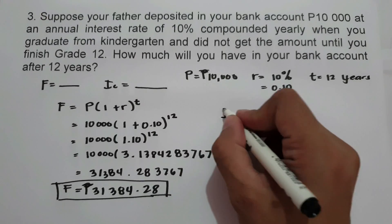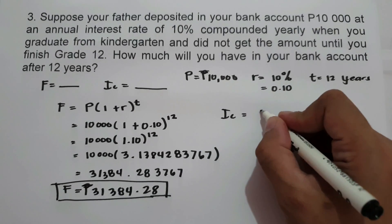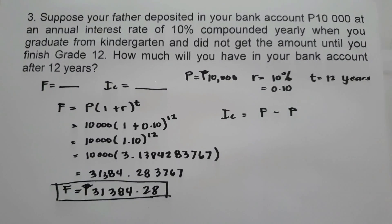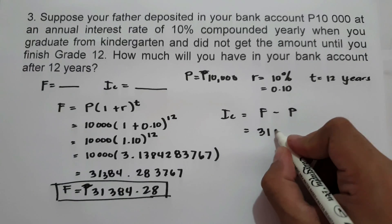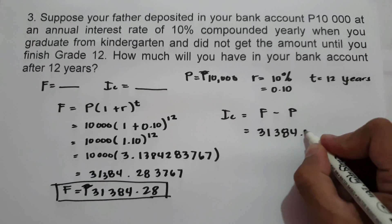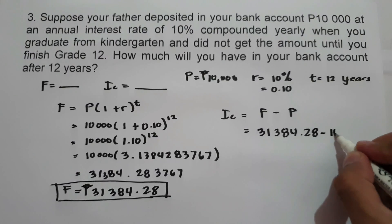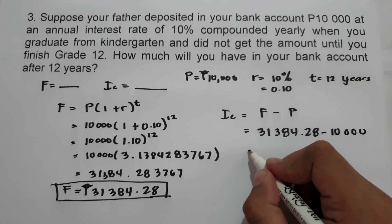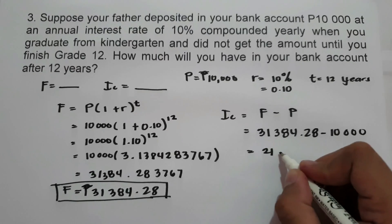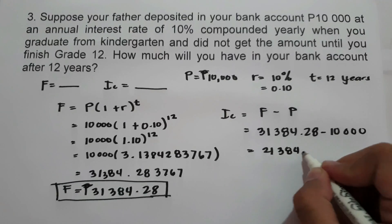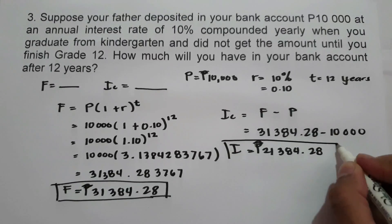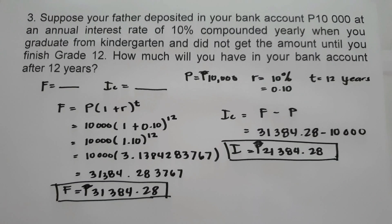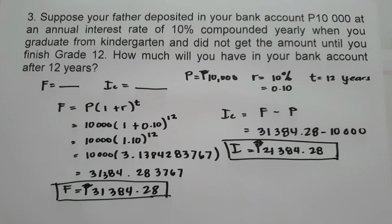To find compound interest, we use the formula: future value minus principal. Our future value is 31,384.28 minus the principal of 10,000, giving us 21,384.28. So this will be the interest after 12 years. I hope you will learn from this lesson. Thank you so much for watching and God bless us all.